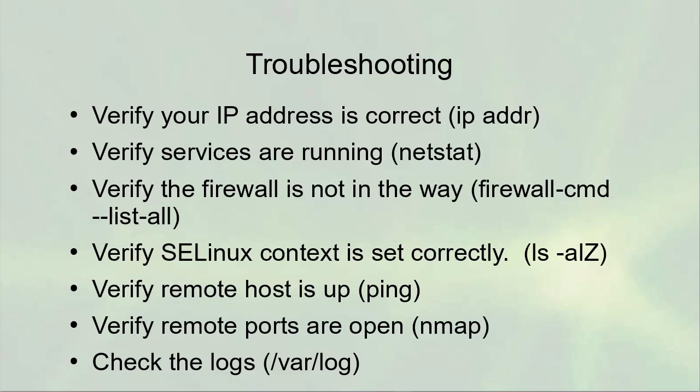If you're having trouble with Samba, verify that IP addresses are correct and that services are running — you can use netstat to view that. Verify the firewall is not in the way using firewall-cmd --list-all to see which services are allowed through. Verify the SELinux context is set correctly using ls -Z or ls -alZ to see context types for files in a directory. You can verify the remote host is up using ping, verify remote ports are open using nmap from a remote machine, and you can also check the logs to see what's happening. That is your overview for Samba.